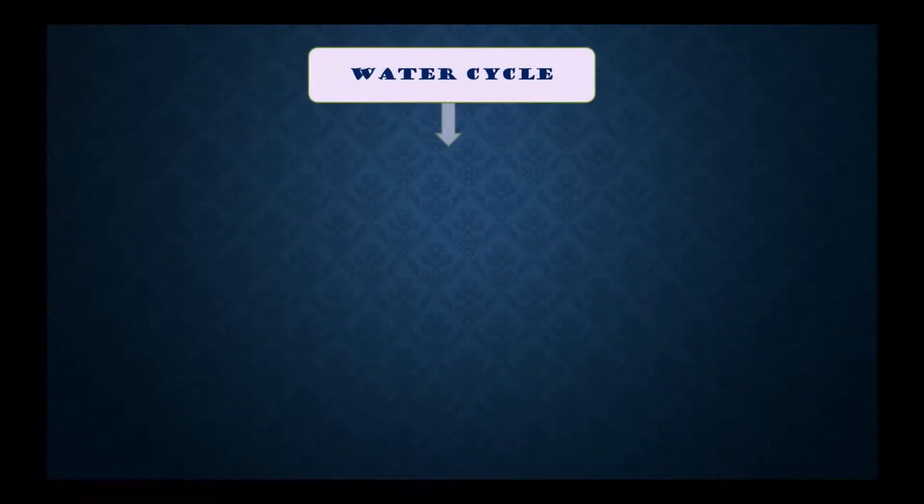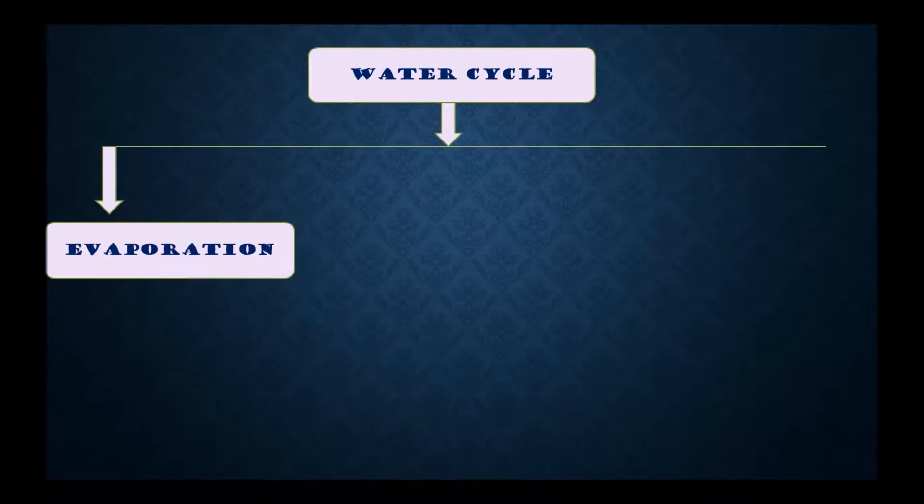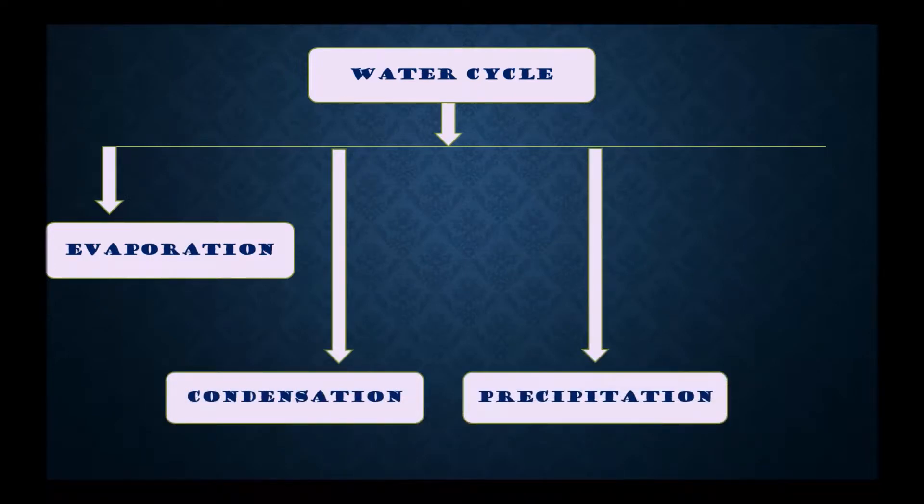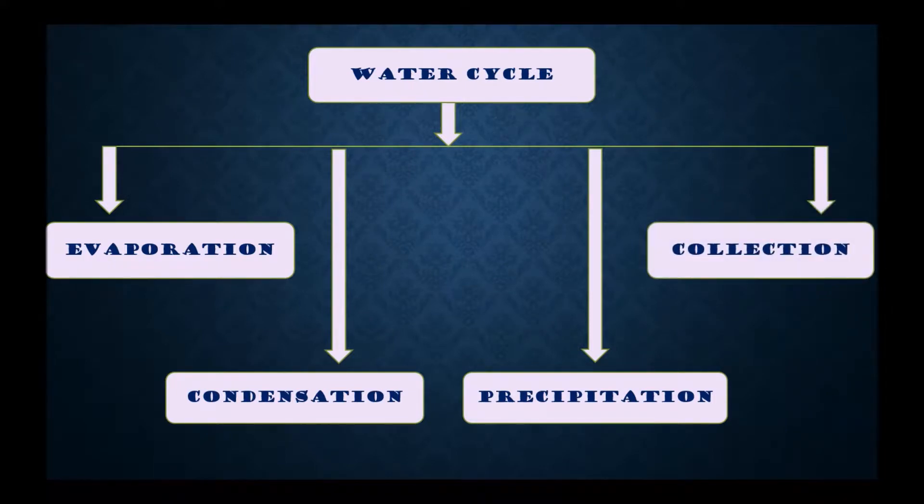It is the greatest recycler of all time. Now there are four main elements of water cycle. The first is evaporation, then condensation, precipitation, and collection.